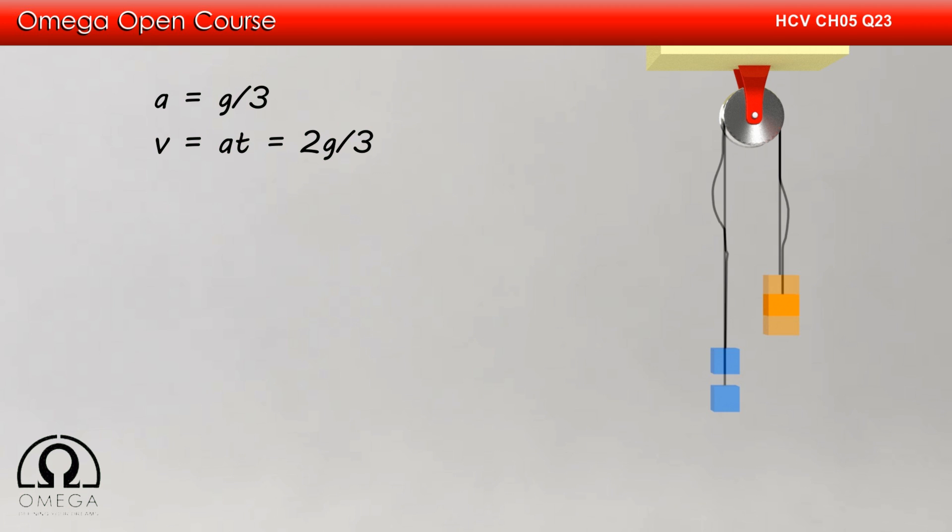Let us assume that the time after which the string is tight again is t. Since the heavier block starts from rest and is moving downward with acceleration g, its displacement after time t is ½gt².